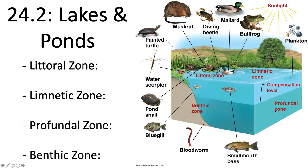You can have the profundal zone, which is the aphotic zone beyond the depth of effective light penetration, so you don't get photosynthetic organisms there. Its productivity depends on organic material falling from the limnetic zone for energy. Then there is the benthic zone, which is the primary site of decomposition — essentially the bottom of the lake.